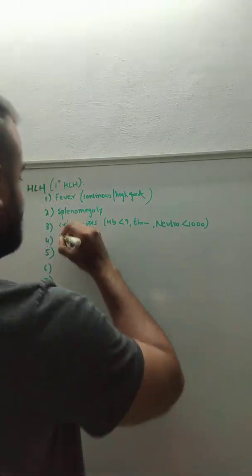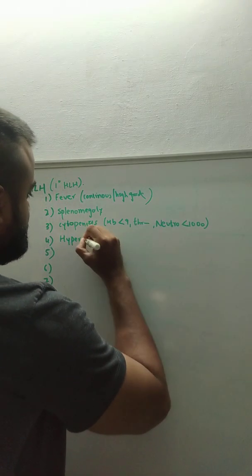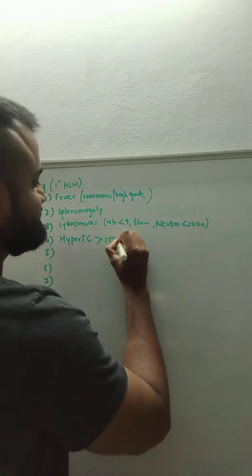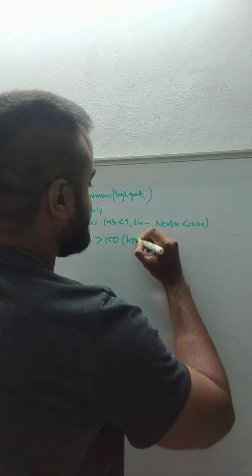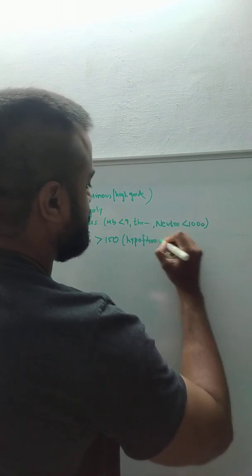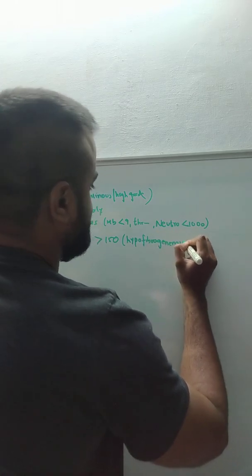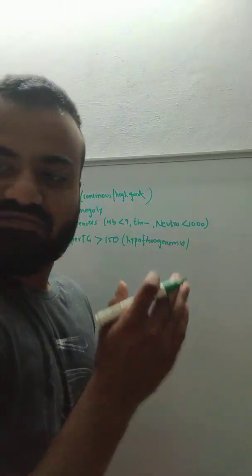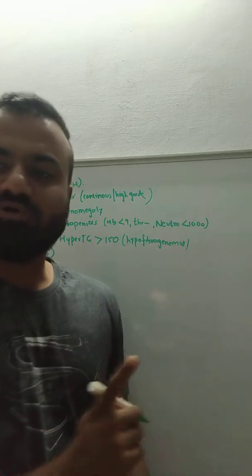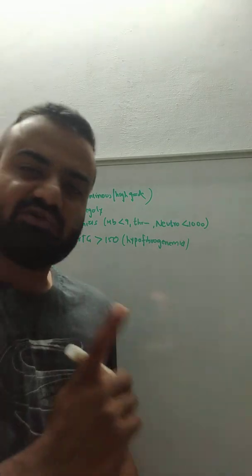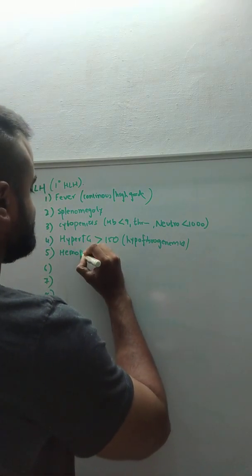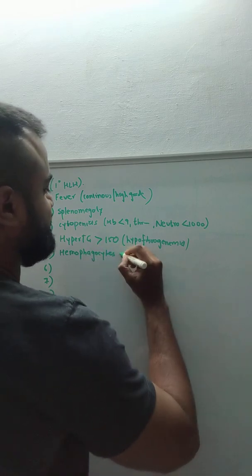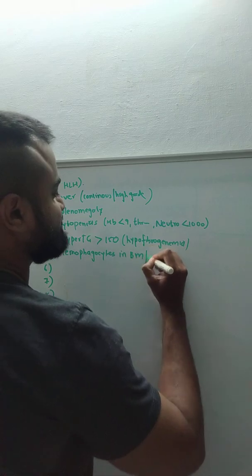Another criterion is hypertriglyceridemia, usually more than 150. Then there may be hypofibrinogenemia. When you do a bone marrow biopsy or splenic biopsy, you find hemophagocytes in the bone marrow or spleen.